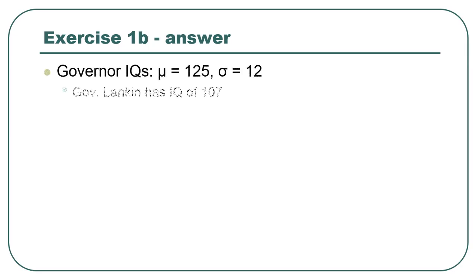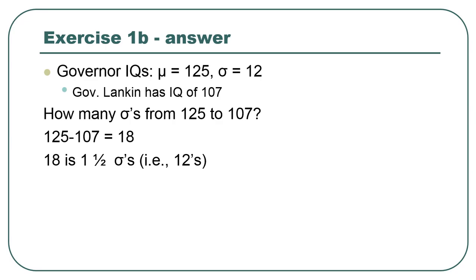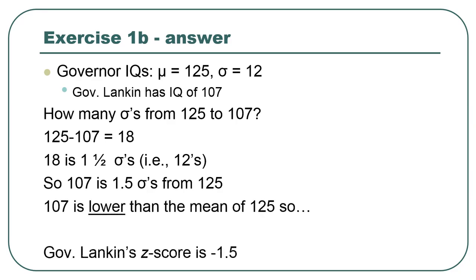Governor Lenkin has an IQ of 107 — a negative z-score because his IQ is below the mean of the group. How many standard deviations from 125 down to 107? There are 18 points, and the standard deviation is 12, so that's one and one-half standard deviations. One and a half standard deviations down is negative 1.5, because the score is lower than the population mean.